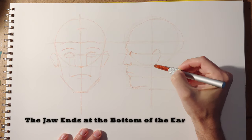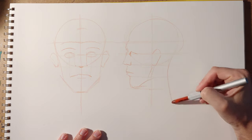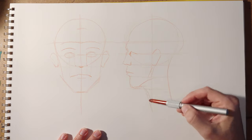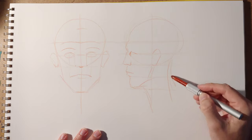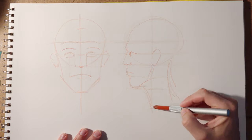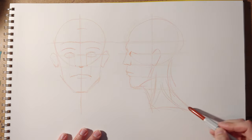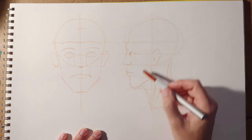Now the only real difference that you have to pay attention to is where the ear goes. It kind of goes right at that center line of the circle, and your jaw is going to connect to the bottom of the ear. And you're going to modify the head and neck interaction as you see fit, depending on whatever it is that you're drawing. And I'll see you next time.